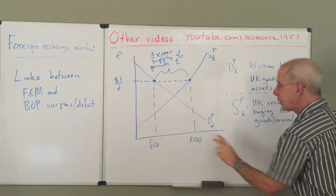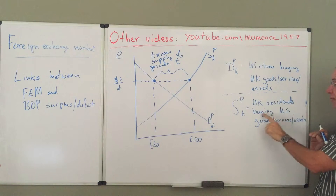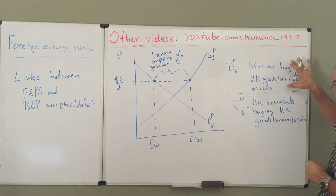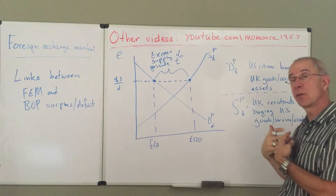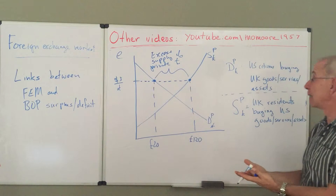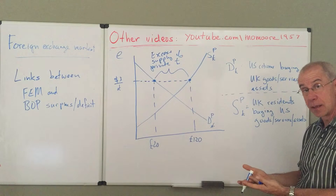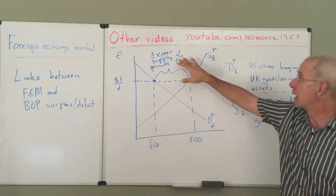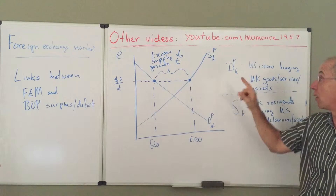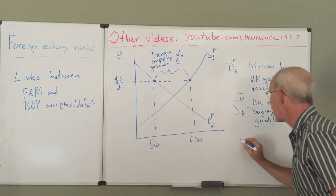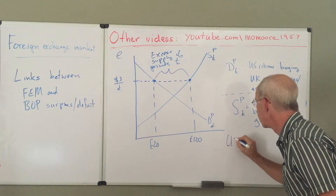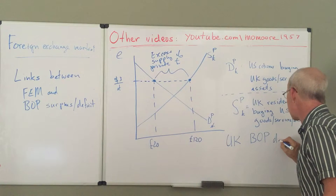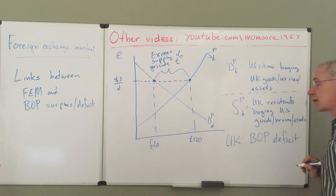The 120 pounds reflects UK residents buying US goods, services, and assets. So if we have a situation where the amount of pounds supplied in total in the foreign exchange market exceeds the demand, we have this excess supply of private pounds — and this also would reflect a UK balance of payments deficit.